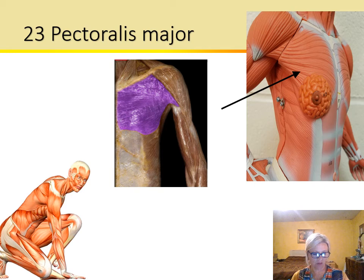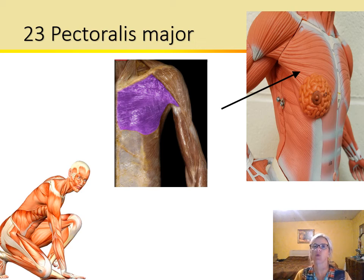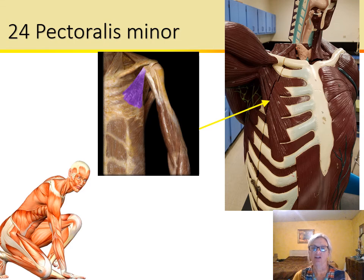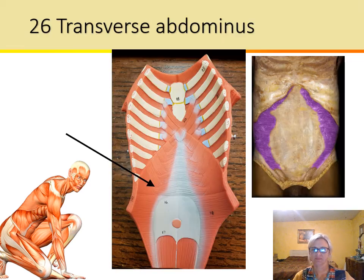The pectoralis major — the greater chest muscle. This flexes and adducts the arm — adduct means bring toward, not abduct — and medially rotates it. Then we have the pectoralis minor, the smaller pec muscle, which is quite a bit smaller. It draws the scapula forward, medially, and downward.